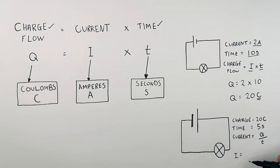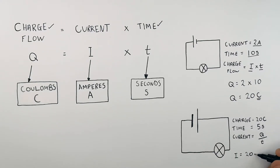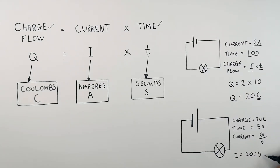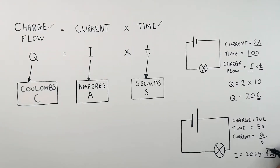So I equals the charge, which is 20 coulombs, divided by the time in seconds, which is 5 seconds. So I equals 20 divided by 5, which gives you a current of 4 amps — the same as saying 4 coulombs of charge flowing every second.